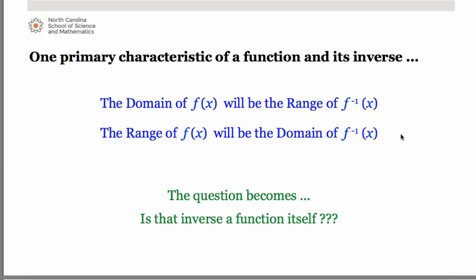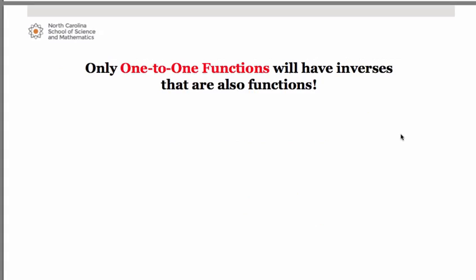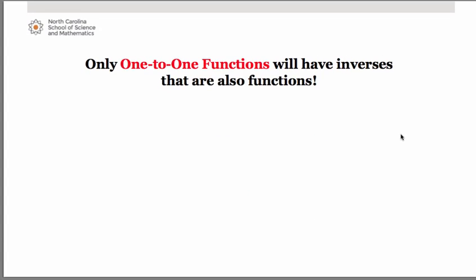The big question is whether the inverse we find is a function itself — it does not necessarily have to be. The only types of functions that will have inverses that are also functions are one-to-one functions. A one-to-one function is one where each x is paired with only one y, and each y comes from only one x — a one-to-one relationship, hence the name.